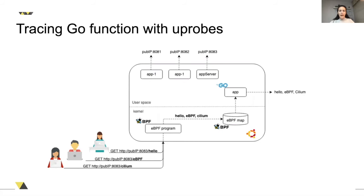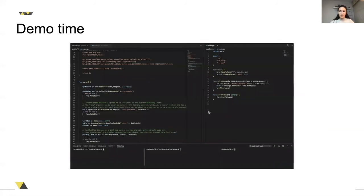In this example, we'll be having the same simple application that allows us to receive a word in the HTTP GET request. We'll be tracing the Go function that receives that word as argument. We'll be using, in this case, gobpf, which uses BCC underlying and provides Go functions, making the flow of compiling, loading, and attaching the program much simpler.